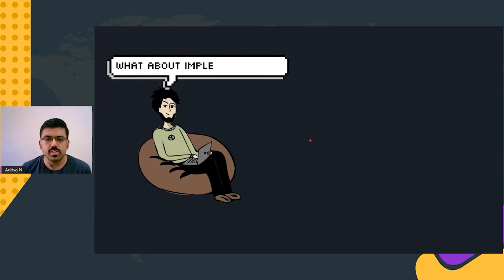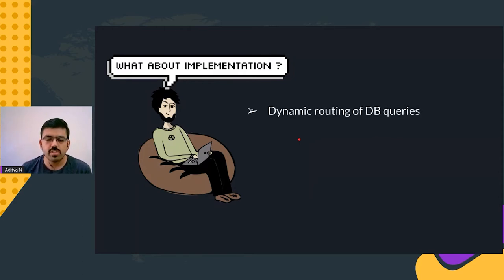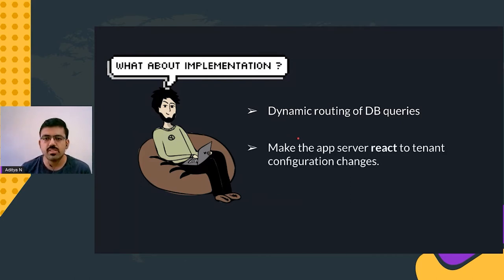There are two major problems to solve in the implementation. The first is dynamic routing of database queries — all queries from within the Django view should be scoped to a particular tenant's database at runtime. The second is that when a new tenant is added or an existing tenant's configuration is modified or deleted, the app servers must be informed of these changes and handle them accordingly to serve subsequent requests properly. The approaches discussed are generic and can be extended to any web framework.